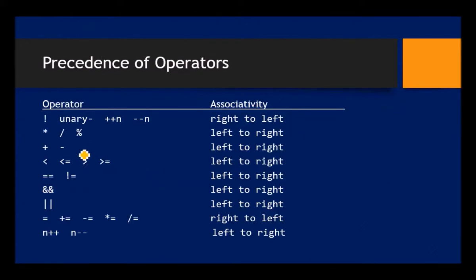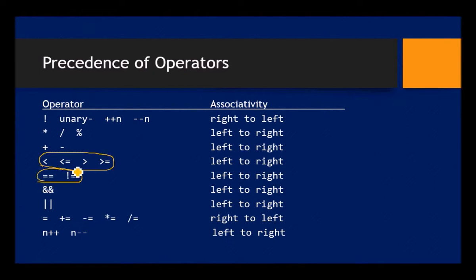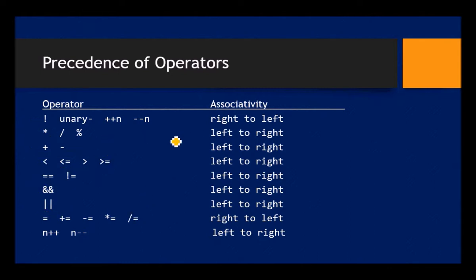We've now added operators to our list. Here is the updated table of operator precedence including all operators discussed so far. We added relational operators (greater than, less than) and equal to/not equal to — these have different precedence rows. Then following the relational operators: logical AND, then logical OR. Evaluation is normally left to right with a few exceptions for increment and decrement.